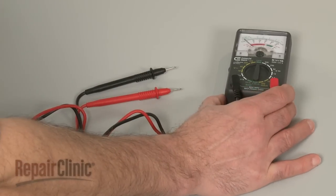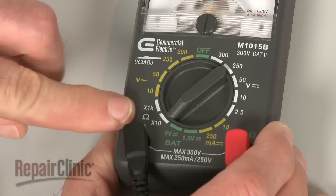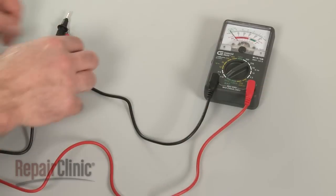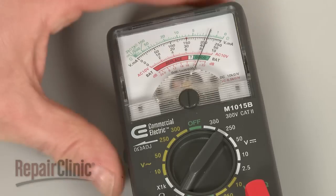When using an analog model, first rotate the range selection dial to the lowest setting for ohms of resistance. Then calibrate the meter by pinching the probes together while adjusting the needle to read zero.